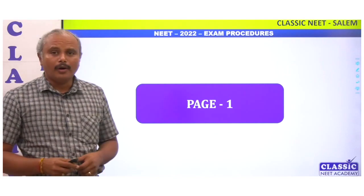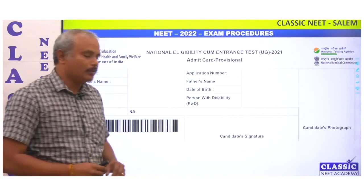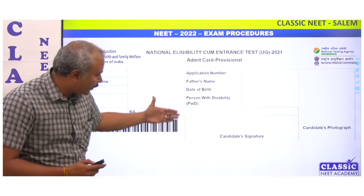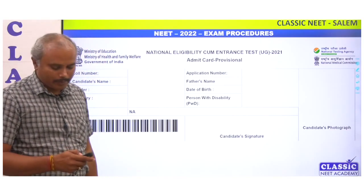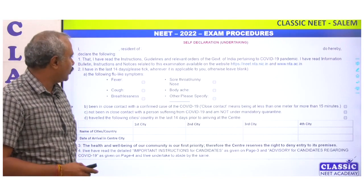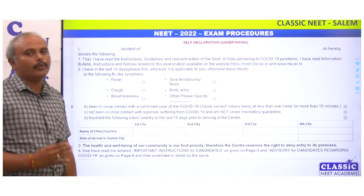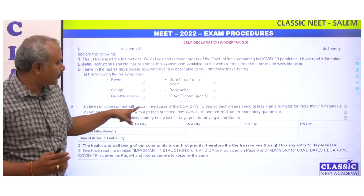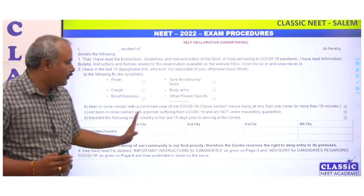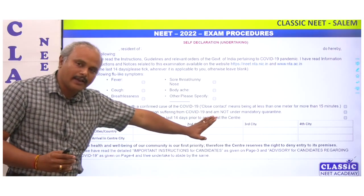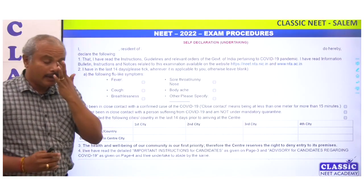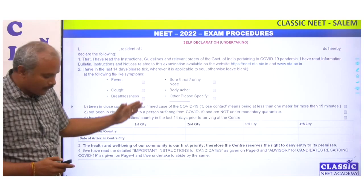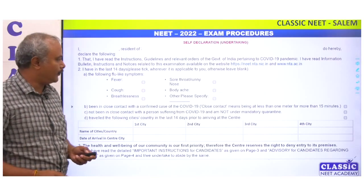The first thing is about the hall ticket. You have to open the hall ticket. There is also a self-declaration for COVID — if you have fever, cough, or if you are in COVID or close contact, then you have to submit that self-declaration. This is the first important thing.